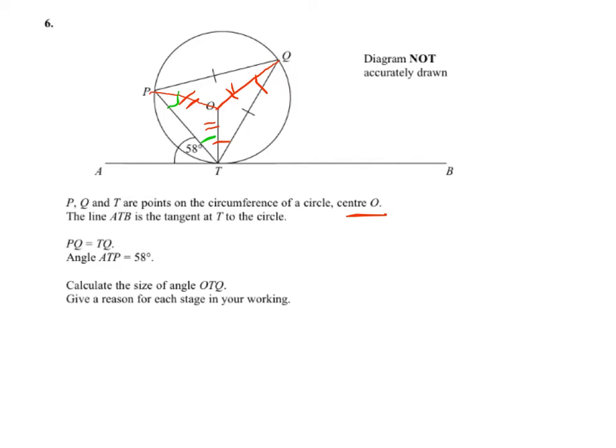Now because ATO, so let's write that down, ATO equals 90 because the tangent, then we know that OTP, OTP is going to equal 90 take 58, which is 32.